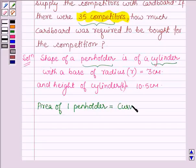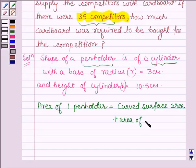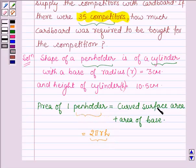The pen holder is in the shape of a cylinder with base. So we have curved surface area plus area of base. The curved surface area of a cylinder is 2πrh where r is the radius of the base and h is the height. Plus the base of a cylinder is a circle, so we have πr². This can be written as πr(2h + r).